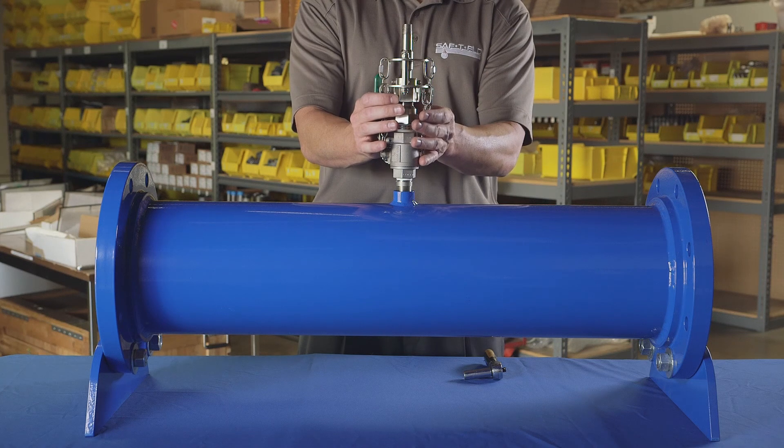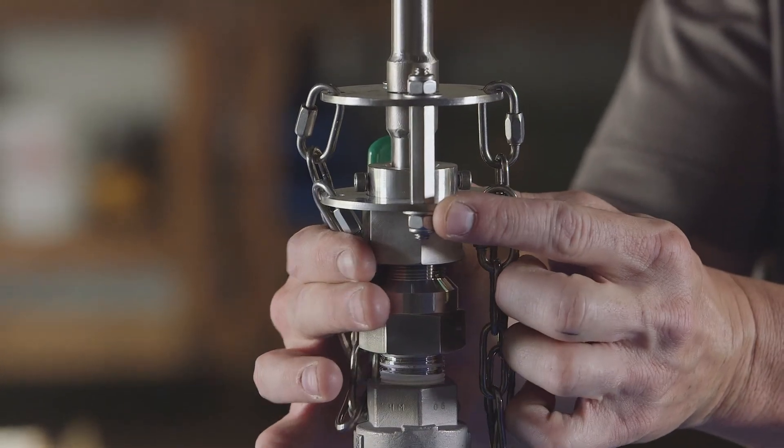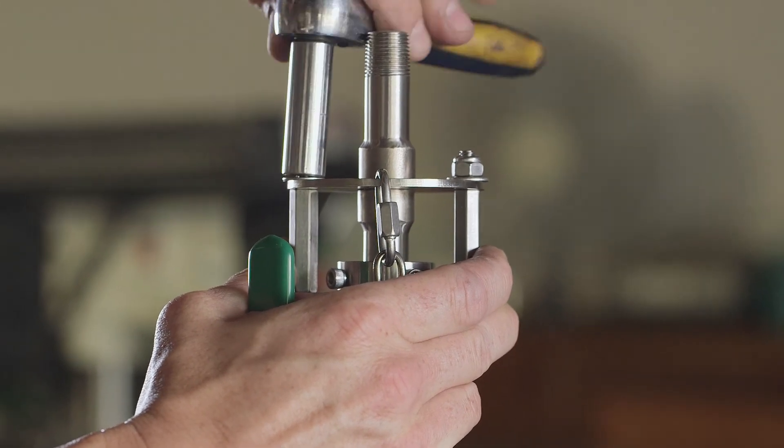Start by slowly turning the packing nut counterclockwise. At this time, one or two turns is adequate. Undo the two nuts securing the upper chain plate to the restraint bolts.